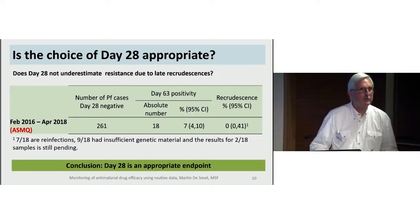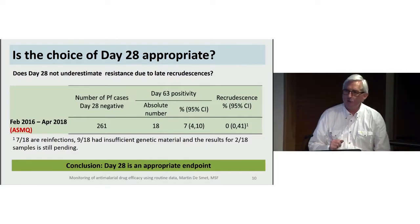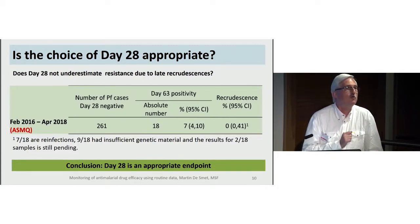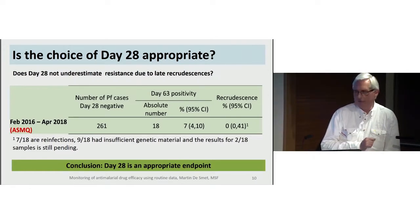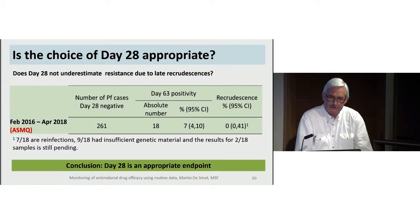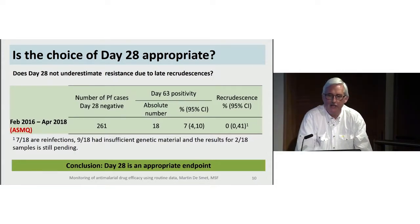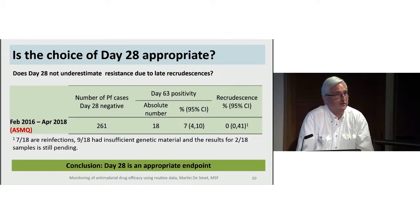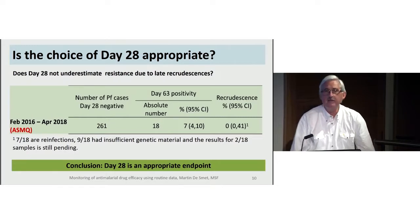The second question is whether day 28 is an acceptable time for evaluation. Normally a standard efficacy study uses day 42, but we use PCR — a more sensitive technique — and we want to identify non-responding patients early. We conducted day 63 follow-up in the artesunate-mefloquine period: of 261 patients with a day 28 negative result, only 7% had day 63 positivity, and there was not a single recrudescence. This led us to conclude that day 28 is indeed a good and sufficient timepoint.